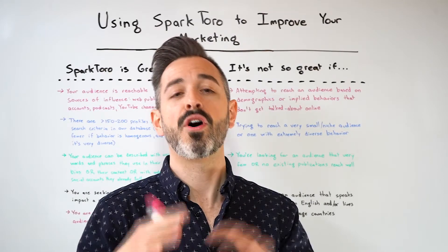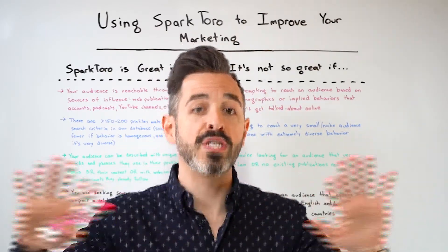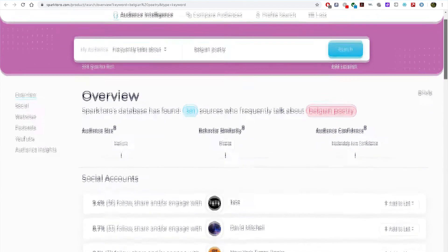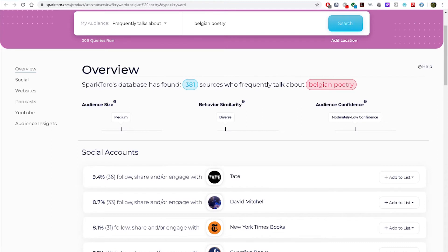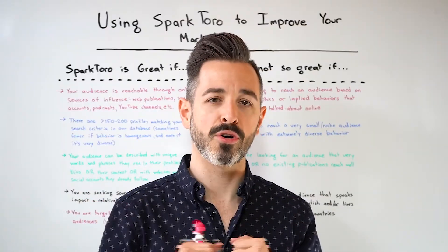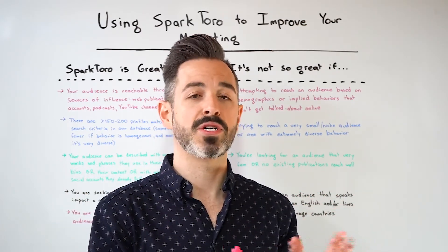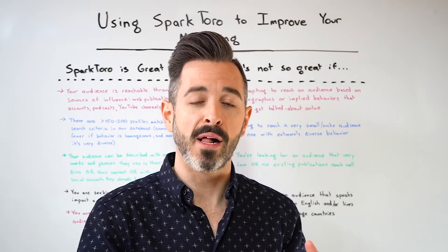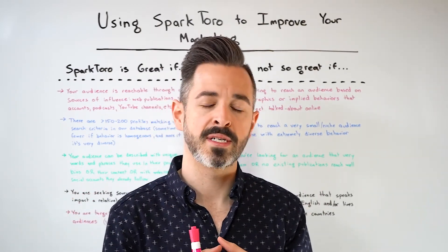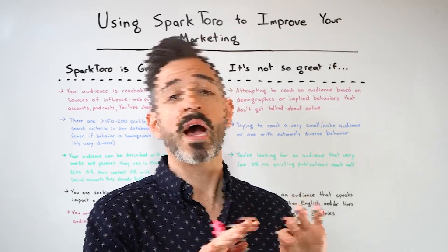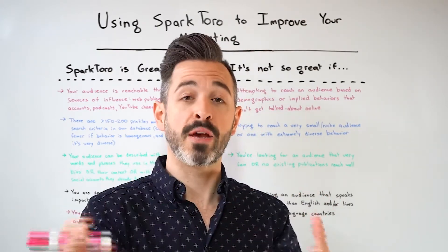It doesn't work as well if an audience is, like we discussed before, relatively small or has very diverse behavior. You can see these figures right at the top of the overview page after performing a search. For example, an audience that talks about Belgian poetry is right on the borderline of being too small and has very diverse behavior, so the results may not be as good as other queries. It also doesn't work as well if you're looking for an audience that has very few or no existing publications, accounts, podcasts, or channels that reach it well. We haven't found many of these, but they do exist. And finally, it doesn't work so well if you're seeking an audience that speaks a non-English language or doesn't reside in or follow sources of influence in English language countries.